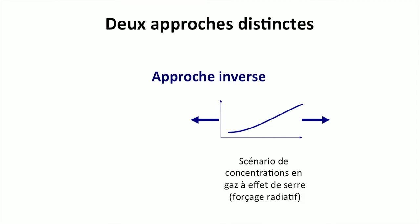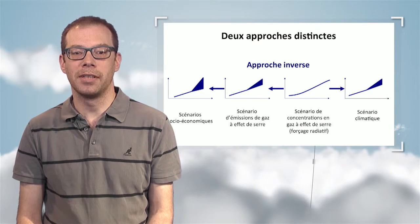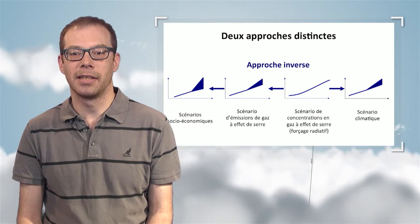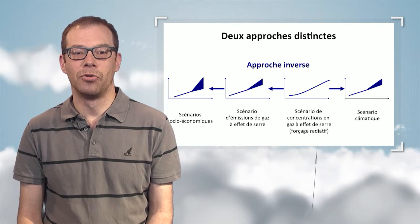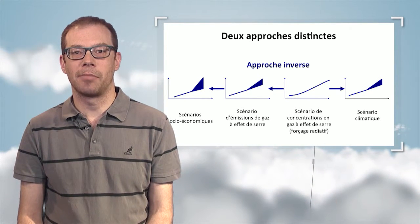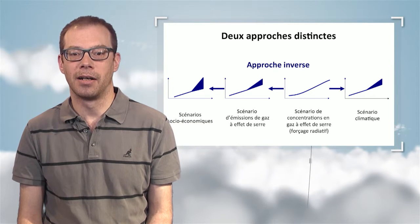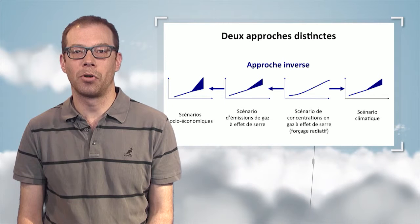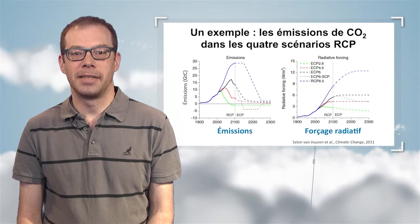Conversely, there is the reverse approach, starting from a greenhouse gas concentration scenario and a radiative forcing scenario, from which we can estimate a climatic scenario. Based on that, we can a posteriori reconstruct socio-economic scenarios that are compatible with the greenhouse gas scenario. One radiative forcing scenario could therefore correspond to several socio-economic scenarios. This is the approach chosen for the fifth IPCC assessment report, because first, it allows us to move away from the political debate, and second, it allows consideration of scenarios with policies that aim at reducing greenhouse gas emissions.